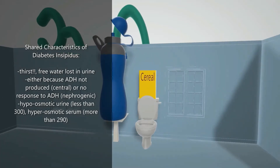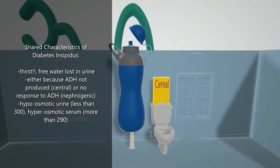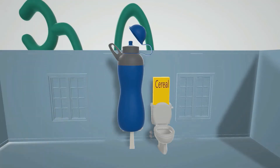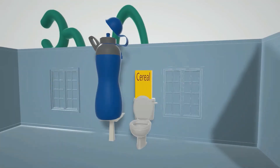There's a cereal box on top of the toilet — cereal for serum — and it's yellow because it's hyperosmotic. The serum osmolality is actually going to be higher than normal, greater than 290, because when free water is lost the relative concentration of ions in the serum goes up.